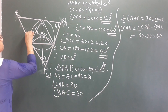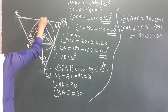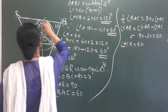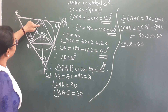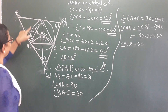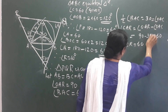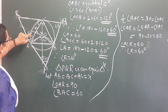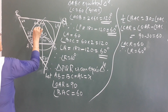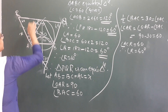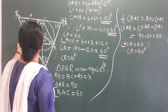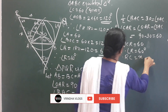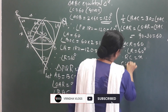Similarly, we can prove that angle A, C, R is equal to 60 degrees.